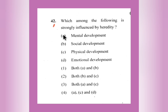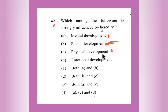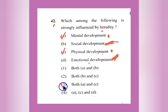Question number 42: Which among the following is strongly influenced by heredity — mental development, social development, physical development, or emotional development? Social development is about mingling with people, so heredity may not influence it. Emotional development also cannot be controlled by heredity — siblings can differ emotionally. Physical development is influenced by heredity — if your father is tall, you will likely be tall. Mental development is also influenced. Both A (mental development) and C (physical development) are the right answer — option number 3.